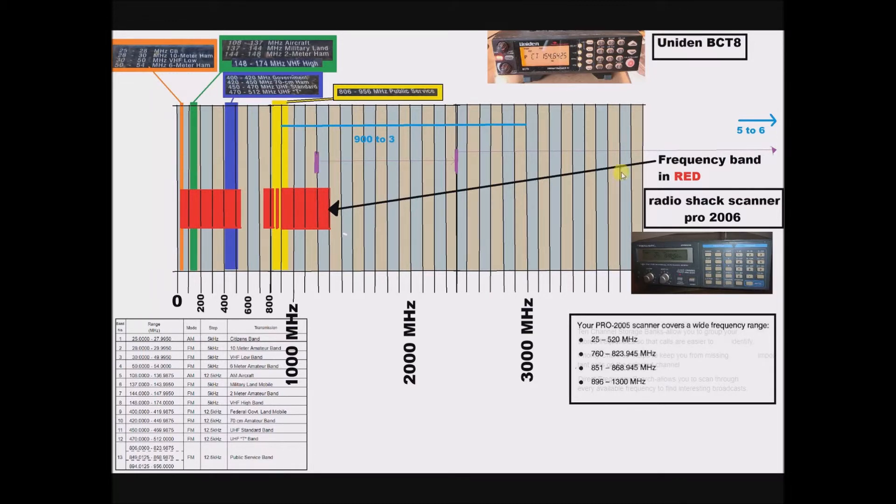So then I looked up the RadioShack scanner Pro2006 for its frequency range. And actually, the Pro2005 has the same frequency range. And actually, this is the 2006, and this is the specs for 2005, whatever. It's the same frequency range.